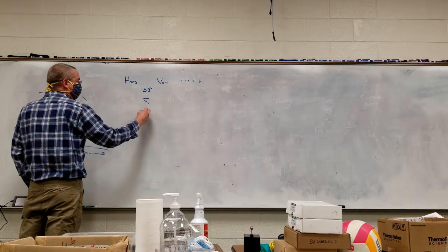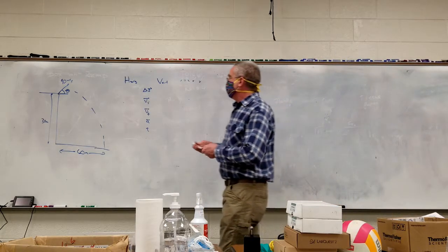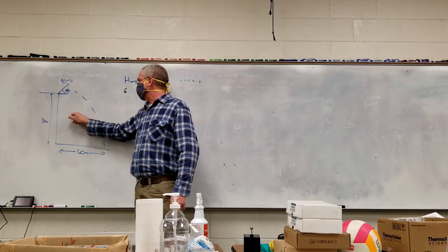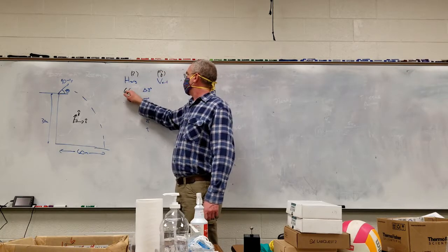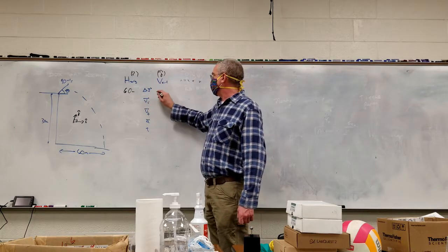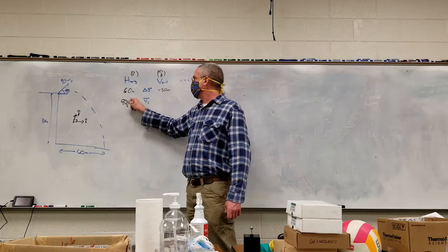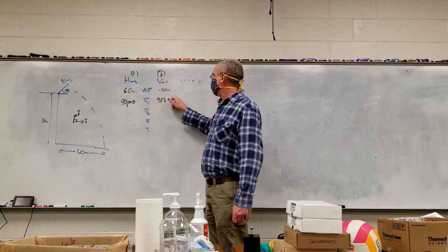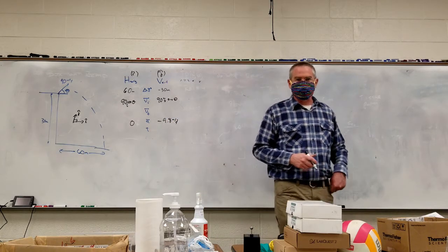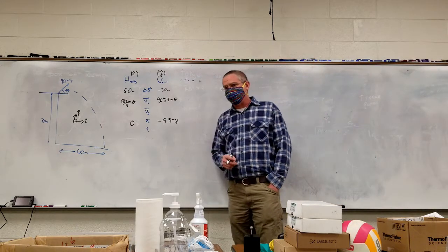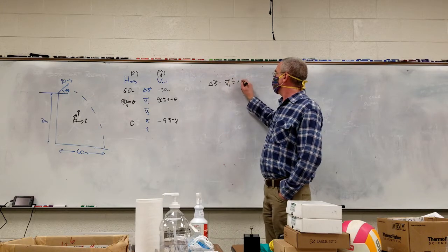I have displacement, initial velocity, final velocity, acceleration, and time. I know horizontally it ends up 60 meters — those are my positive directions, using i-hat and j-hat notation. So horizontal displacement is 60 meters; since up is positive and it's dropping, vertical displacement is negative 30 meters. My initial horizontal velocity is 90 cos θ, vertical is 90 sin θ. Horizontal acceleration is zero, vertical is negative 9.8 m/s². We'll plug into displacement equals initial velocity times time plus one-half a t².